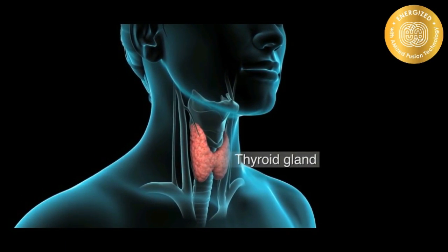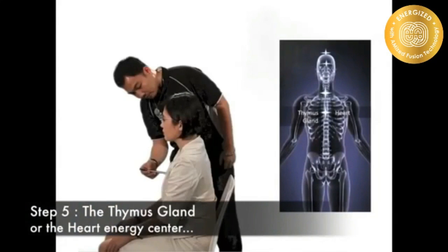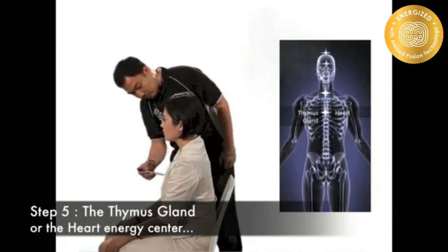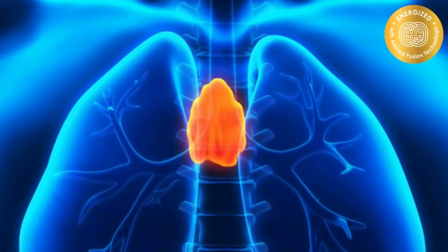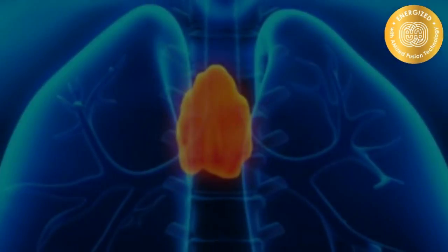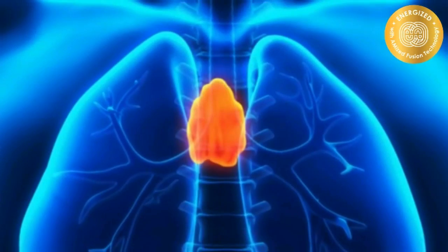When deficient, weight gain may occur. Step 5: The thymus gland, or the heart energy center. The main thymus gland function is to produce and process lymphocytes or T-cells, called white blood cells. White blood cells are the body's immune system, which protect the body by producing antibodies that stop the invasion of foreign agents, bacteria and viruses.